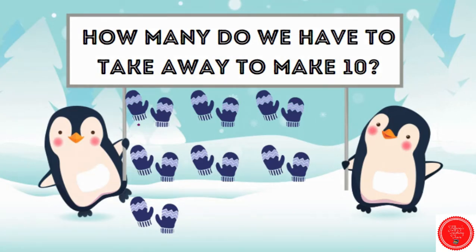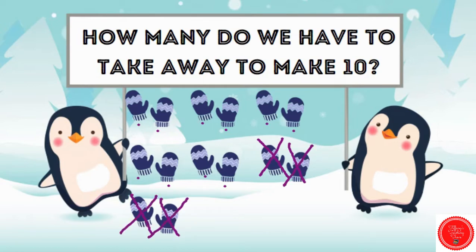1, 2, 3, 4, 5, 6, 7, 8, 9, 10. Now let's cross out the ones we don't need. These are all extra. So how many do we have to take away? Correct, four. So we needed to take away four to make 10.